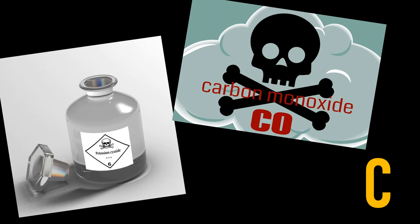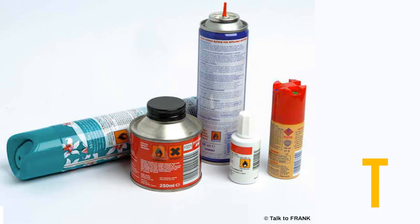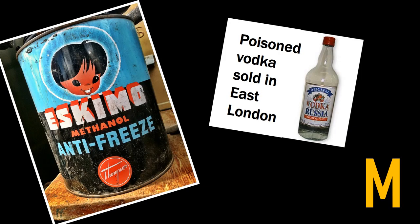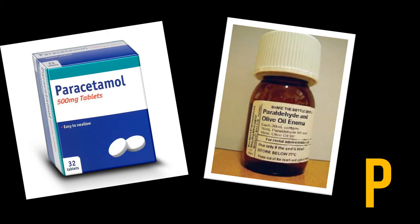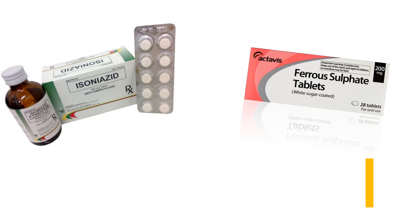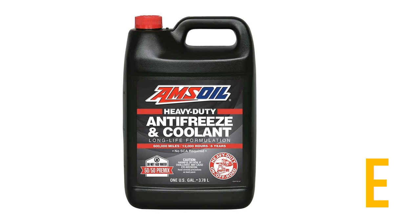Cyanide. Carbon monoxide. Aminoglycosides. Toluene from glue sniffing. Methanol. Uremia. DKA — and you can shoehorn in AKA and SKA while you're at it. Paracetamol. Paraldehyde. Isoniazid. Iron — you might see someone with an iron overdose. Lactate — that's a biggie. Ethylene glycol. And salicylates — another biggie.